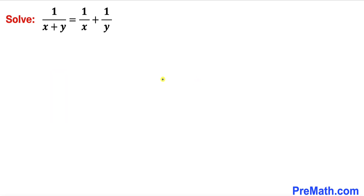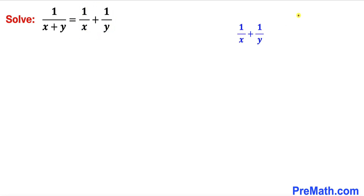Let's get started with the solution. The very first thing we are going to do is manipulate the right hand side of this equation. Let's focus on this part — I have copied it down — and make the common denominator x times y.